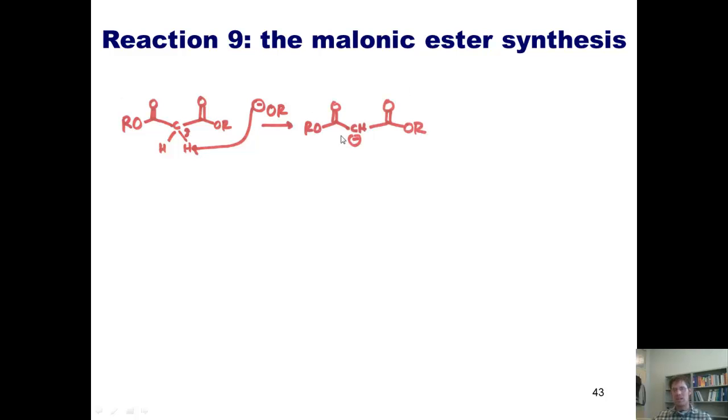This enolate is resonance stabilized into two carbonyls. This is now going to stir with my alkyl halide. That negatively charged carbon comes into the alkyl group, kicks off my bromide, and alkylates singly at that alpha carbon.